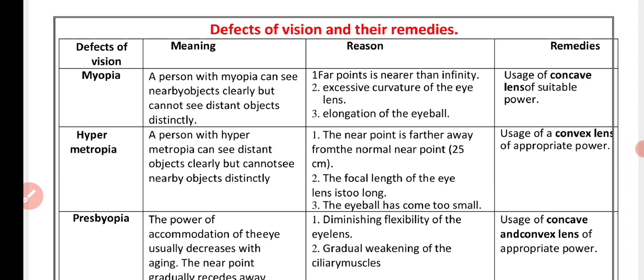Myopia means a person with myopia can see nearby objects clearly but cannot see distant objects distinctly. Reason: far point is nearer than infinity, excessive curvature of the eye lens, elongation of the eyeball. Remedies: usage of concave lens of suitable power.